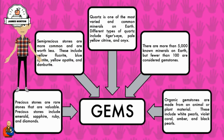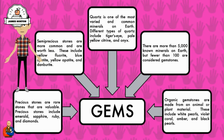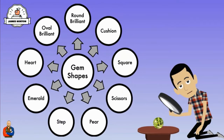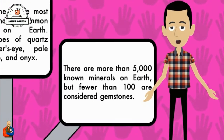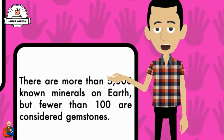You might have heard the vocabulary word gems or gemstone before. A gemstone is a mineral that looks very beautiful when it's cut and polished. Gemstones can come in many different shapes and sizes. Some gem shapes include round brilliant, cushion, square, scissors, hair, step, emerald, heart, and oval brilliant. Out of the many known minerals on Earth, only about 100 are considered gemstones.